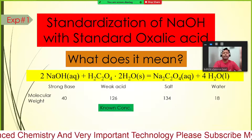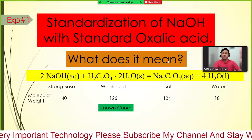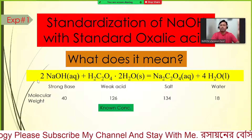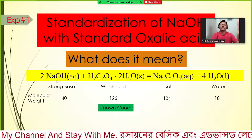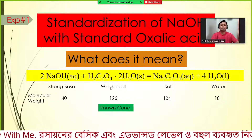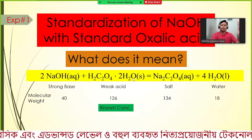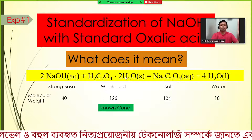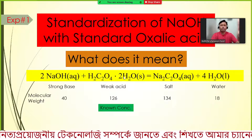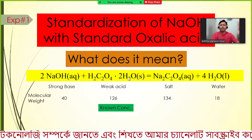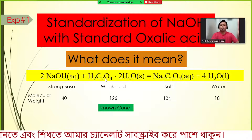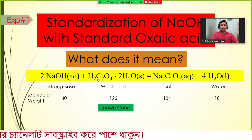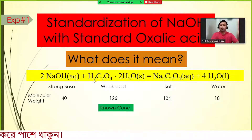Let's see the reaction that happens when sodium hydroxide reacts with oxalic acid. Oxalic acid has two moles of water of crystallization, but that is not the main factor in the reaction. From oxalic acid we get two H⁺ ions, and these two H⁺ ions react with sodium hydroxide. So always two moles of NaOH are needed. This gives us the balanced equation.